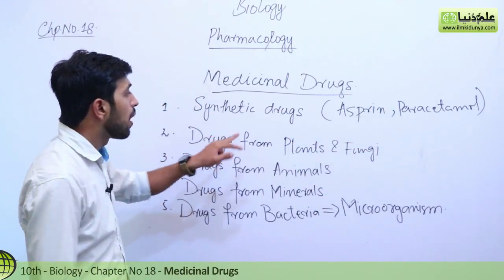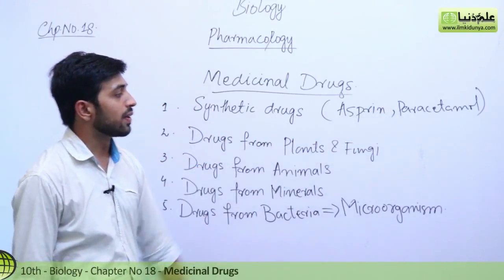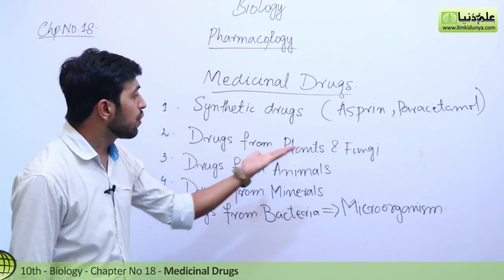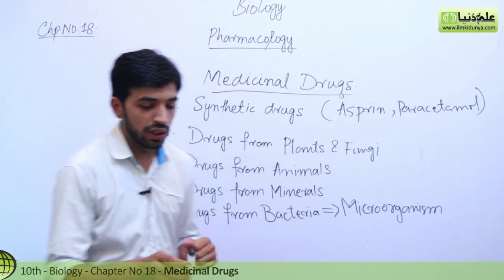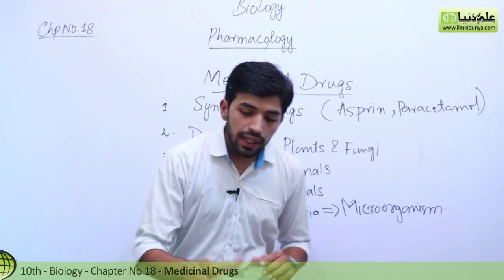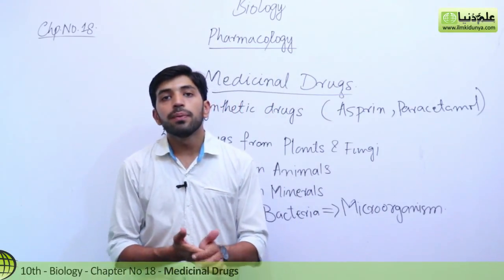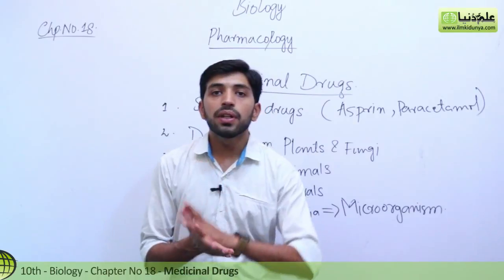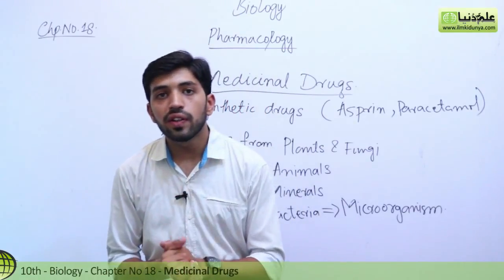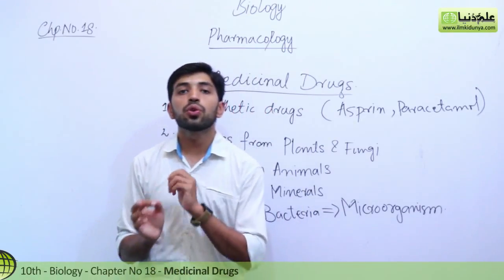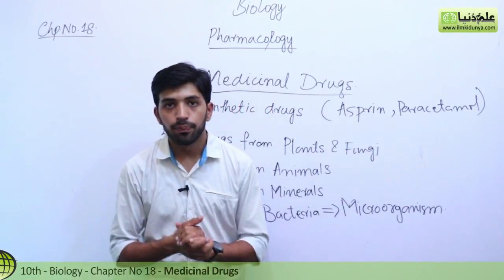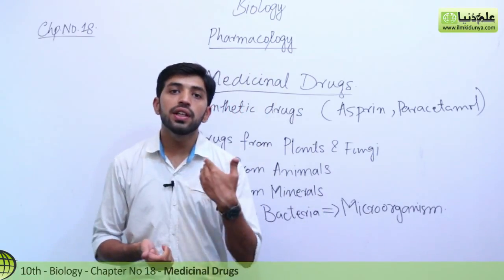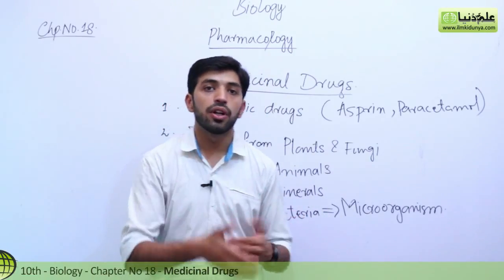A second category is drugs from plants and fungi. Many drugs have come from plants and fungi. One key example involves scientist Sir Alexander Fleming, who discovered the first antibiotic.